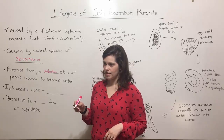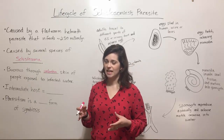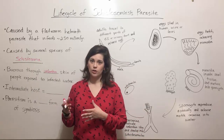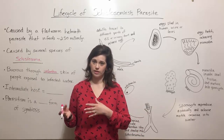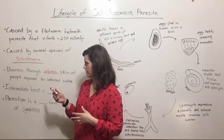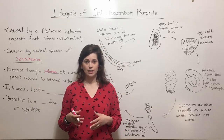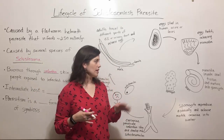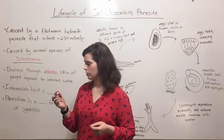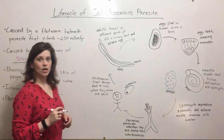Interestingly, this parasite's life cycle also involves what's known as an intermediate host. While humans are the definitive host where sexual reproduction of the parasite happens, the life cycle also requires an intermediate host where asexual reproduction occurs. That intermediate host is a type of water snail.